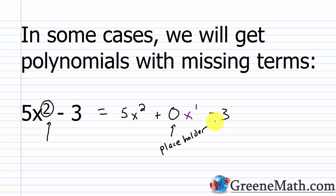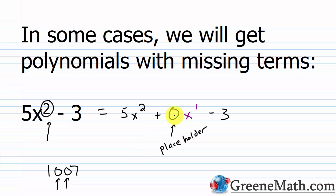For example, in a number like 1007, these zeros are just placeholders. They're telling me that I have zero hundreds and zero tens. It is the same thing — I have 0x to the first power here, so the zero is just nothing more than a placeholder.